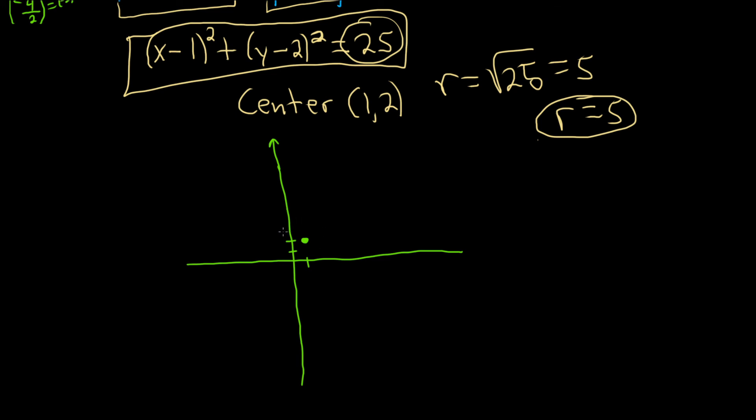So I'm going to go up 5. 1, 2, 3, 4, 5. Boom. I'm going to go right 5. 1, 2, 3, 4, 5. Boom. I'll go left 5. 1, 2, 3, 4, 5. Boom. Down 5. 1, 2, 3, 4, 5. Boom. Just go up, down, left and right by 5.